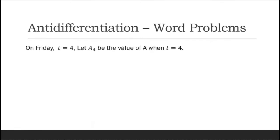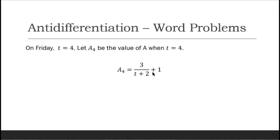Thus on Monday, the area of the wound was 2.5 square centimeters, since 5/2 equals 2.5. For Friday, we have t = 4, so let A₄ be the value of A when t = 4.